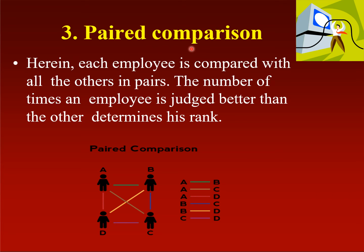The third method is paired comparison. Each employee is compared with all others in pairs. For example, if there are four employees A, B, C, and D, then A is compared with B, B with C, C with D, and D with A. The number of times an employee is judged better than others determines their rank. If A is judged better four times, then A ranks first. This is the paired comparison method.